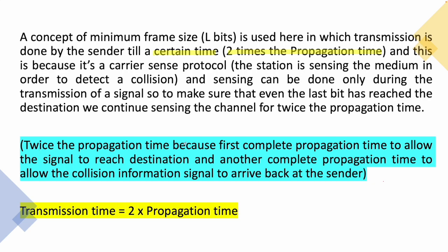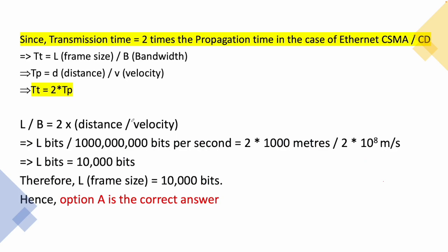So twice the propagation time equals the transmission time. Applying the formula: transmission time = frame size / bandwidth, and propagation time = distance / velocity. We get L bits divided by 10⁹ bits per second equals 2 × (1000 meters / 2×10⁸ meters per second). Cross-multiplying gives L = 10,000 bits as the answer.